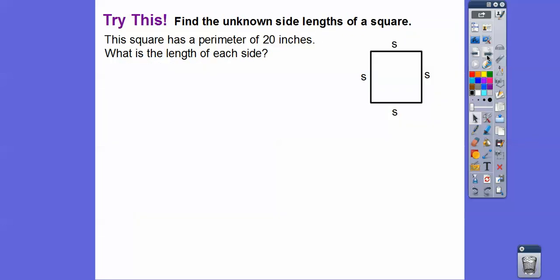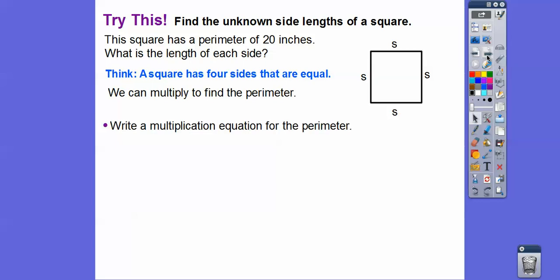Let's try this, you guys. So we're going to find the unknown length of the side of a square. So this square has perimeter 20. What is the side length on this? All right, so a square has four sides. They're all equal. So we can multiply to find the perimeter. So let's write a multiplication equation for the perimeter. And so they told us all these side lengths are s this time. So we can add s plus s plus s plus s. I was thinking because there's four s's. So it's going to be 4 times s. Equals the perimeter because there's four of them.